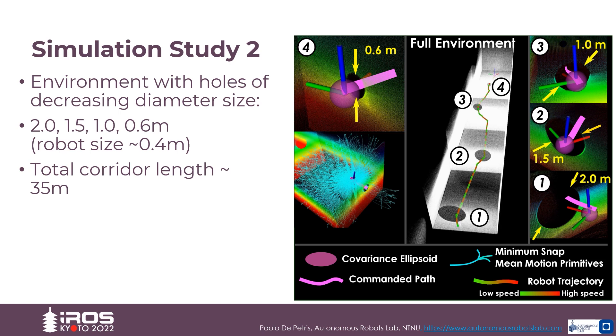In the second simulation study, the robot is commanded to reach a goal that requires it to pass through four circular openings of decreasing diameter ranging from 2 to 0.6 meters.